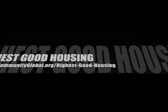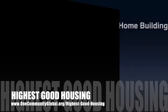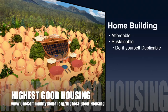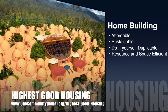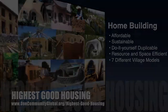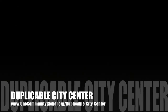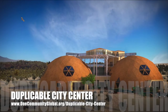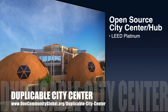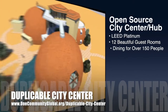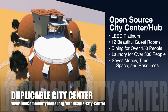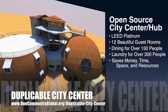The One Community approach to Highest Good Housing is eco-artistic home building that is affordable, sustainable, do-it-yourself duplicable, resource and space efficient, and consists of seven different sustainably constructed village models. One Community is also creating an open source duplicable city center designed to be LEED Platinum certified, provide 12 guest rooms, dining for over 150 people, and laundry and recreation space for over 300 people, all while saving money, time, space, and resources.